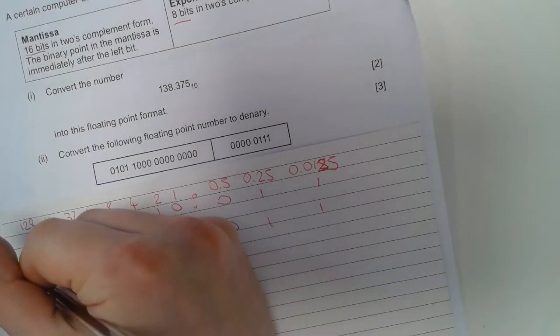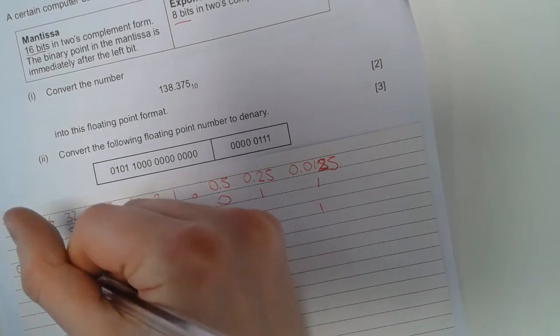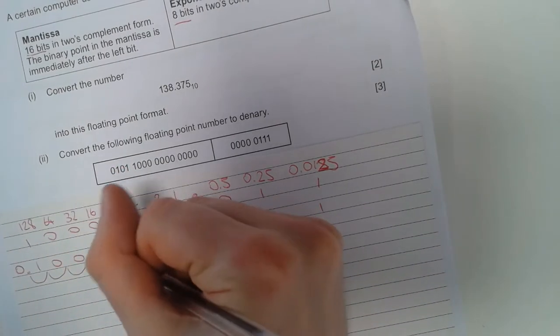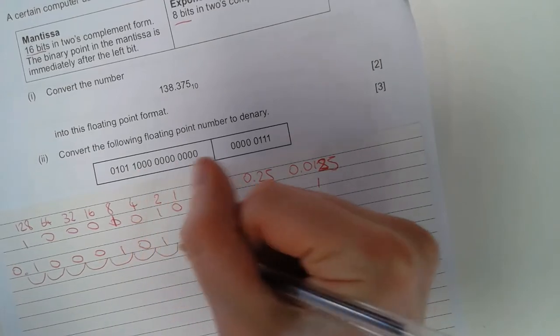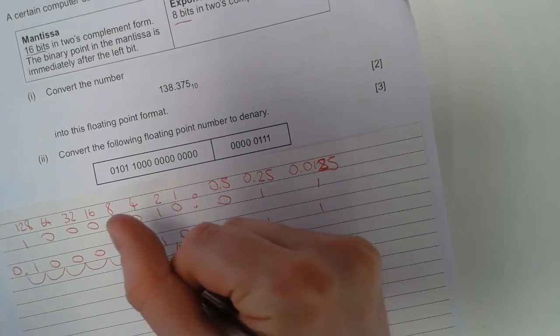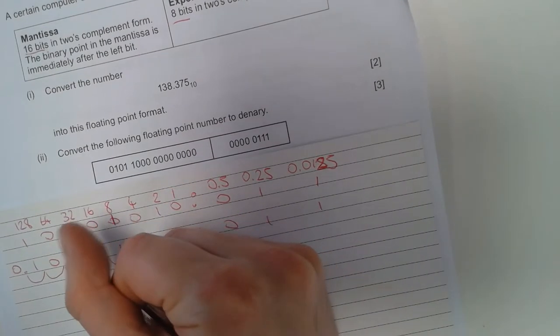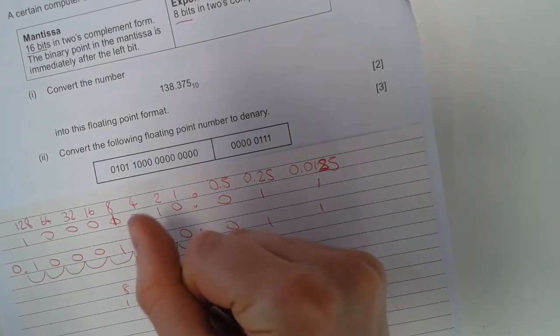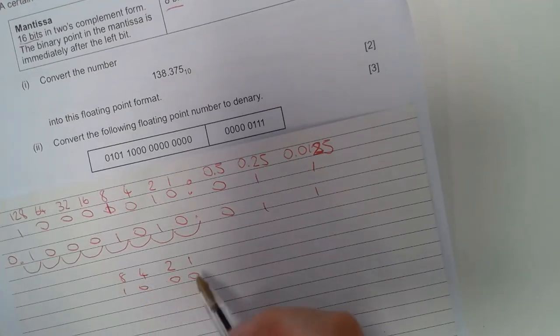And then we see how many places we need to move. 8 places, that's our exponent. So we go 1, 2, 4, 8. 1, 0, 0, 0. This is our value here.